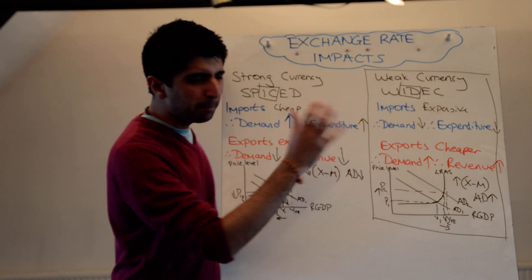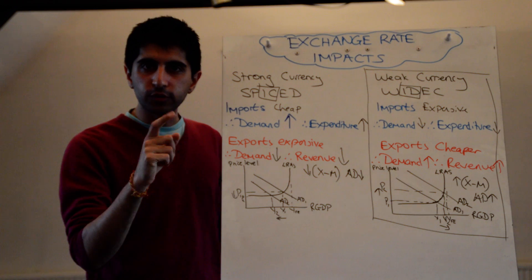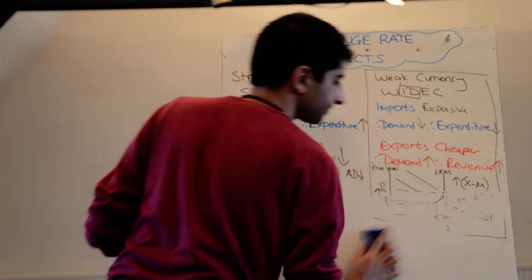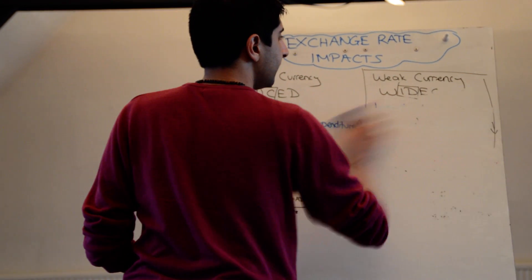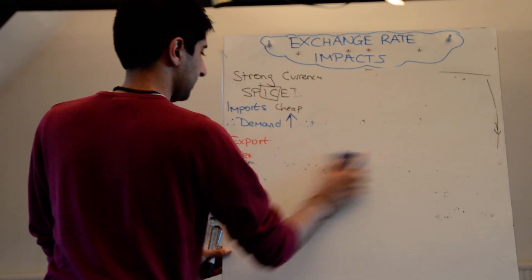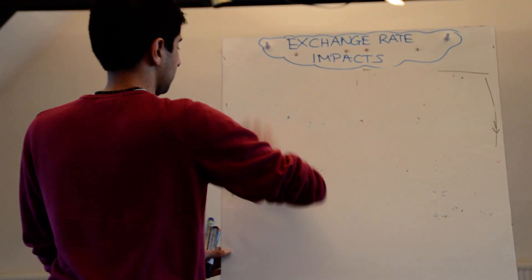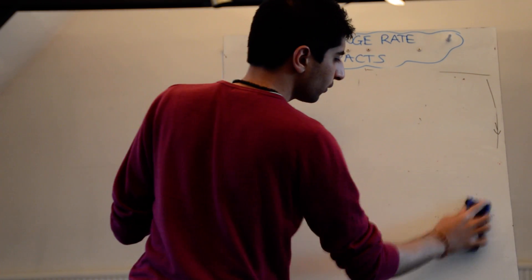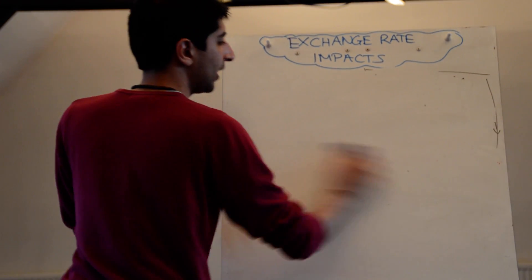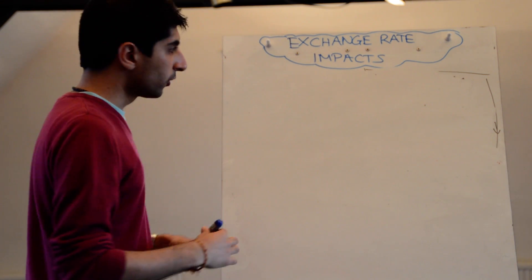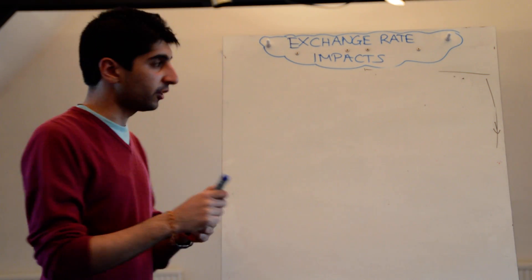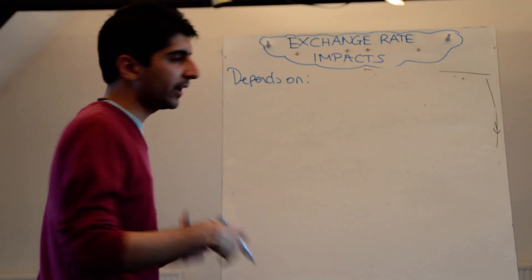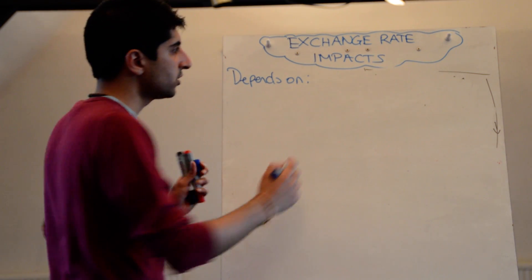Make sure you know that there is a big aggregate demand-side link here to both strong and weak currencies, but there is also an aggregate supply link to both. For a strong currency, you'll see a reduction in demand-pull inflation as AD shifts to the left, but also a reduction in cost-pull inflation because imports have become cheaper — reducing the cost of production for firms and shifting short-run aggregate supply to the right. One final thing we need to do is to evaluate. The end effect on inflation, growth, and unemployment from an exchange rate change depends on several factors.